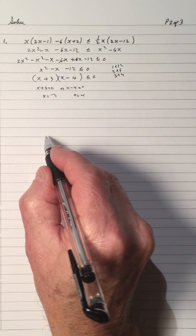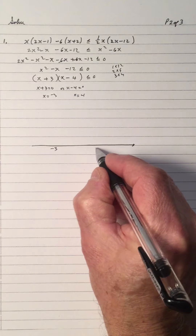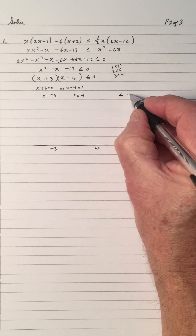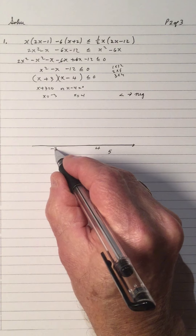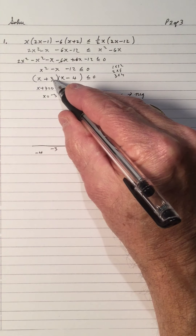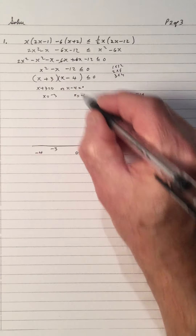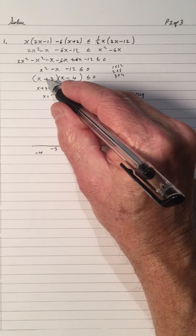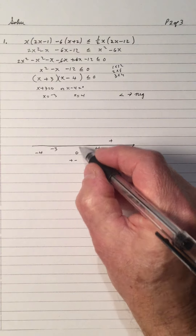If we draw a number line and put x equals negative 3 and x equals 4 on it, we have a less than or equal to sign, so we're looking for the negatives in the product. Let's try x equals 5: plugging 5 into each factor gives a positive times a positive, which is positive. Now let's try x equals 0 — that gives a positive times a negative, which is negative.